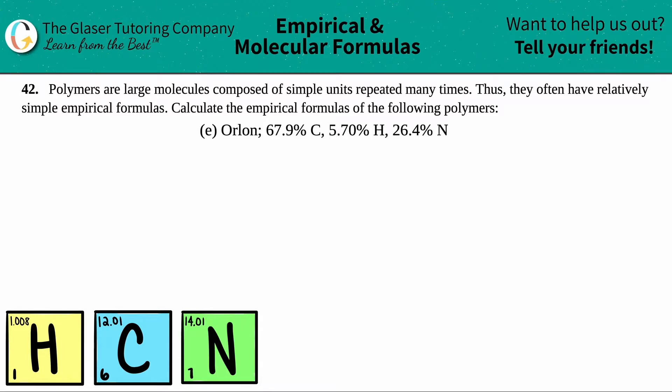Number 42. Polymers are large molecules composed of simple units repeated many times. Thus, they often have relatively simple empirical formulas. Calculate the empirical formulas of the following polymers, and then we have letter E, which is Orlon. So Orlon is a polymer that consists of 67.9% carbon, 5.70% hydrogen, and 26.4% nitrogen.